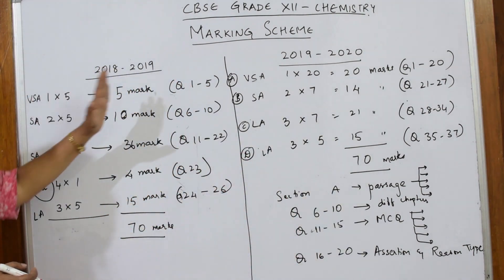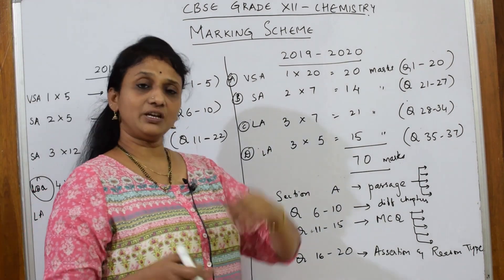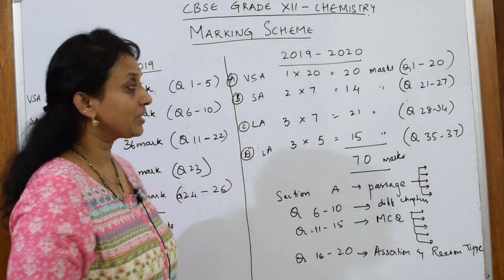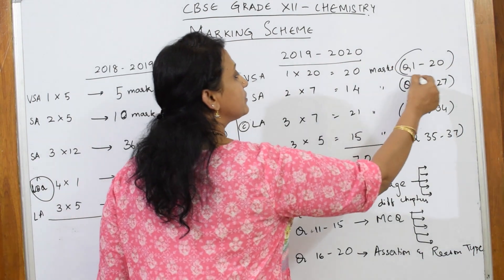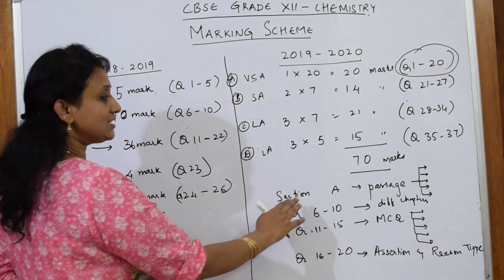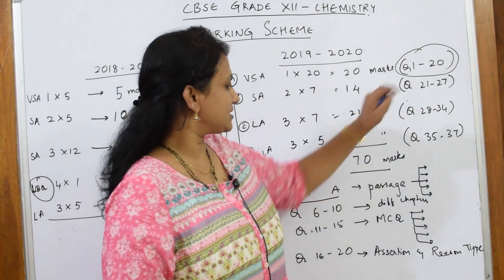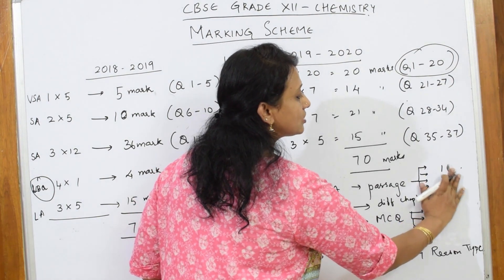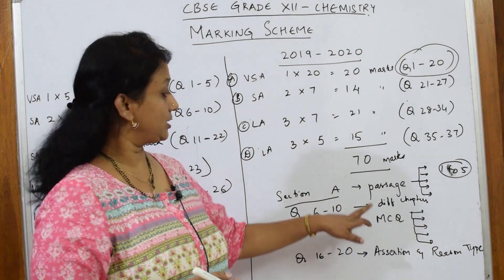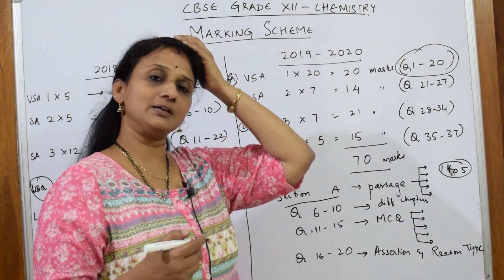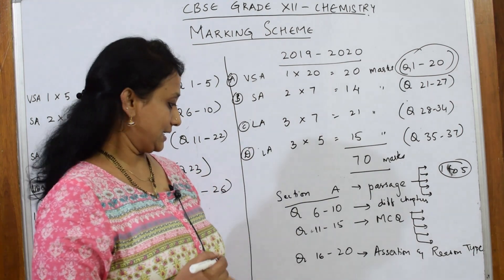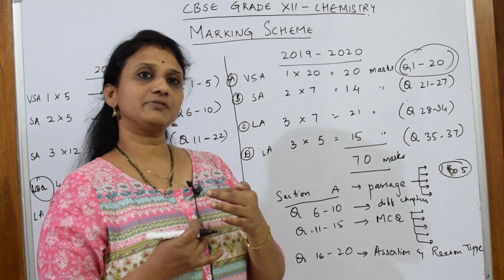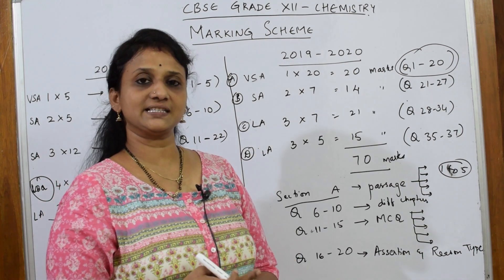Now let's look at the upcoming question paper. The first important thing is that it's an advantage for most students. In Section A, questions 1 to 20 are divided into sub-parts. Questions 1 to 5 will be passage-based — a passage is given, for example from electrochemistry or surface chemistry, and five one-mark questions are asked based on it.